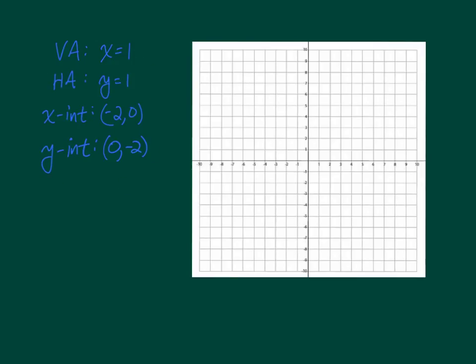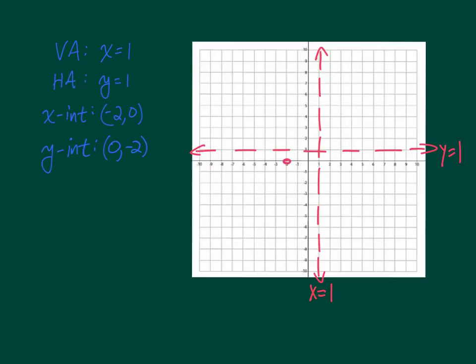To graph this, I will first plot the horizontal and vertical asymptotes. The vertical asymptote is at x equals 1, and the horizontal asymptote is at y equals 1. Then we plot the intercepts: the x-intercept at negative 2, 0 and the y-intercept at 0, negative 2.